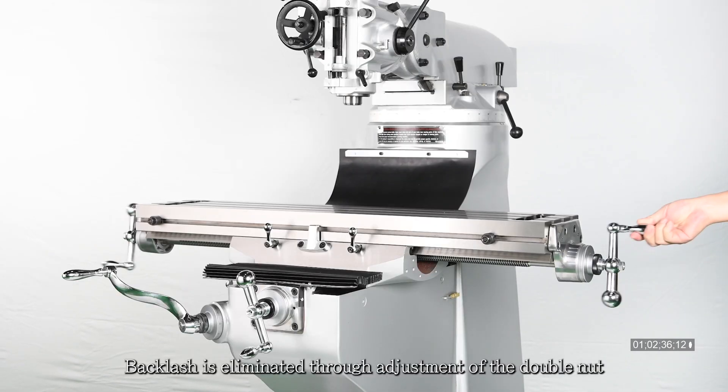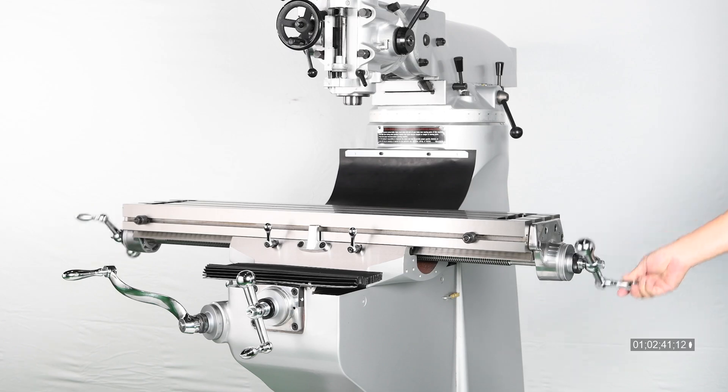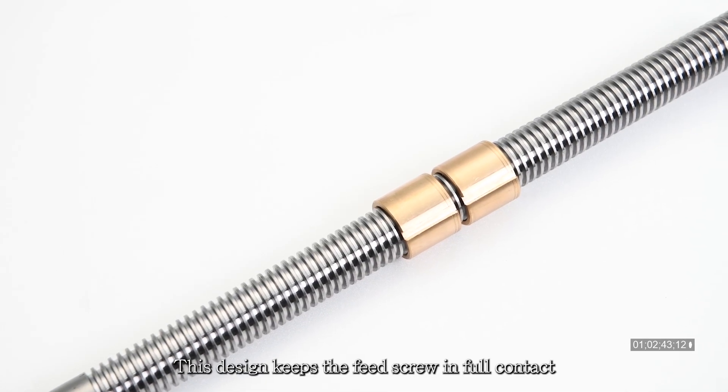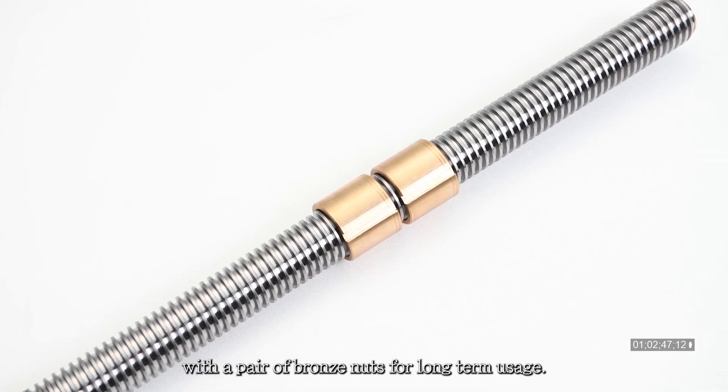Backlash is eliminated through adjustment of the double nut instead of squeezing a single nut. This design keeps the feed screw in full contact with a pair of bronze nuts for long-term usage.